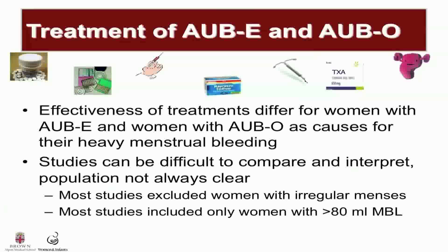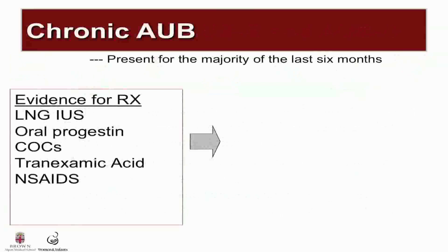Effectiveness of these treatments can differ for women with AUB-E and women with AUB-O as causes for their heavy menstrual bleeding, so you have to focus on the literature in this area. This is hard because studies can be difficult to compare and interpret as their populations are not always clear. Most studies excluded women with irregular menses. In the past 30 years, approximately 30 randomized clinical trials have been performed comparing non-surgical treatments of heavy menstrual bleeding. Most studies — approximately three quarters — excluded women with irregular menses outright, and two-thirds required women to lose 80 milliliters of blood per cycle to be included. So in this talk, the focus is chronic AUB: bleeding that's been present for the majority of the last six months.